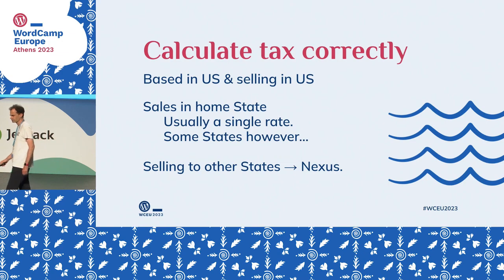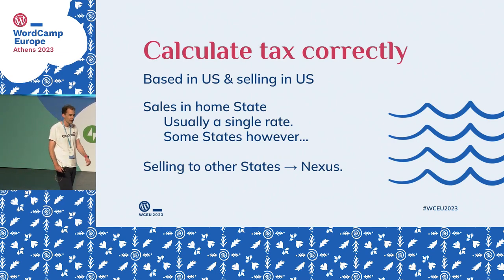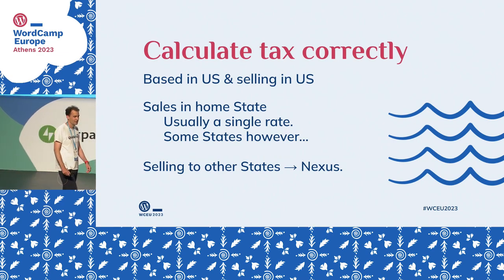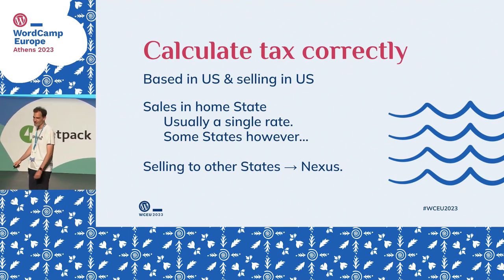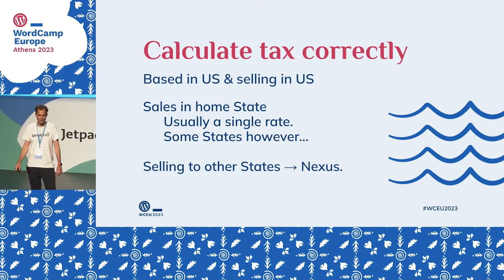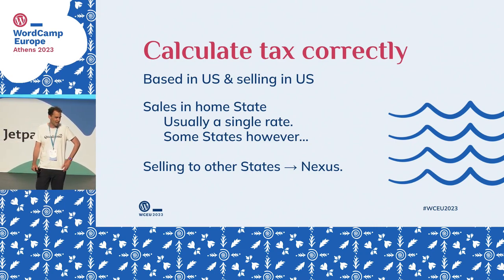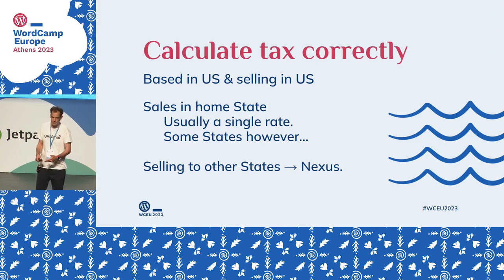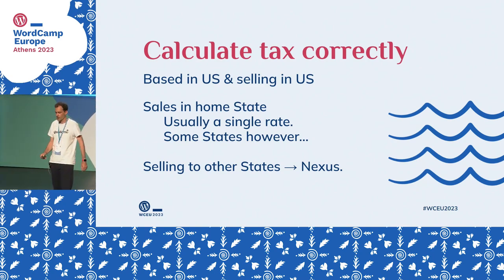If you're based in the US, it's usually a single rate for most states. Some states have no sales tax, such as Delaware. Other states are a bit more of a nightmare: in the US, there are more than 12,000 different tax jurisdictions — there are swimming pools that are in their own tax jurisdiction. Depending on your state, it can be more complex, and in some cases you have to configure many different rates.